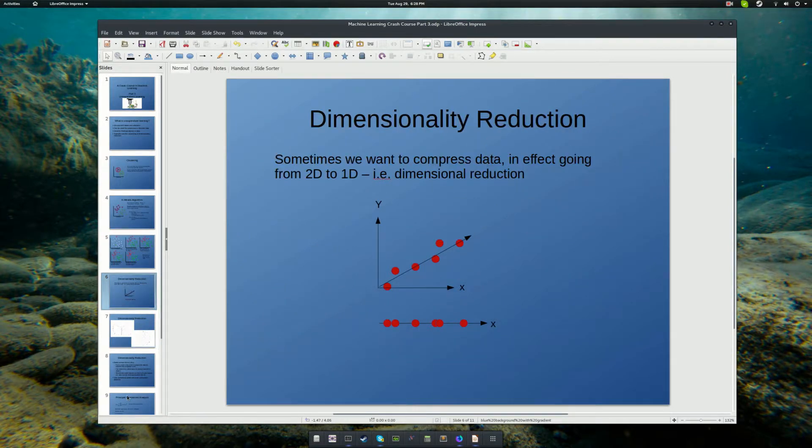Another use for unsupervised learning is something called dimensionality reduction. Sometimes you may want to compress data, in effect going from, say, two dimension to one dimension, or in other words, dimensional reduction.